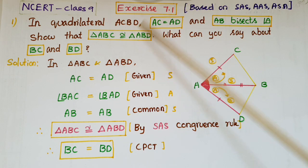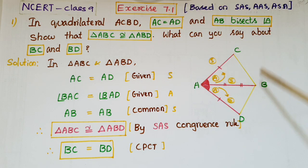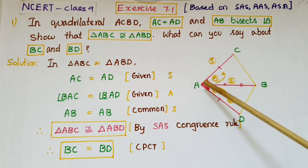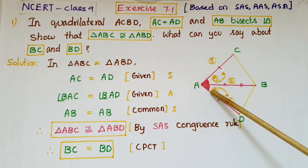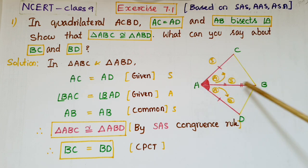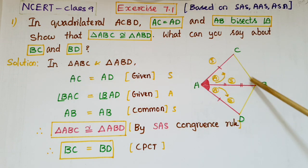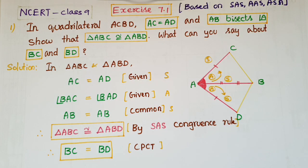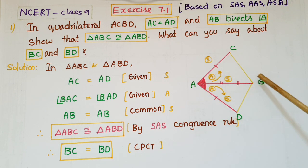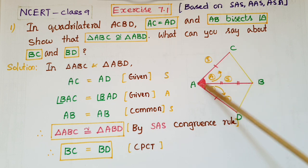The first problem: in a quadrilateral ACBD, AC is equal to AD and AB bisects angle A, so these two angles are equal. Show that triangle ABC is congruent to triangle ABD. AB divides this quadrilateral into two triangles: triangle ABC and triangle ABD.